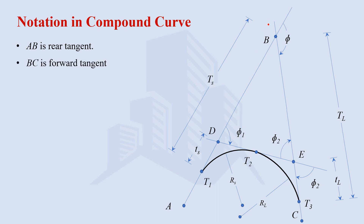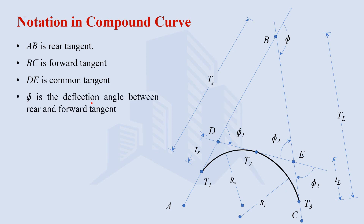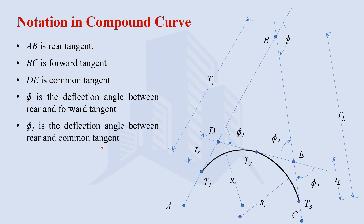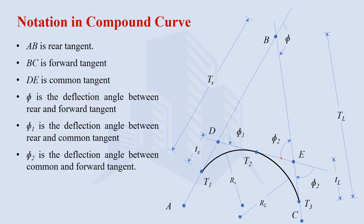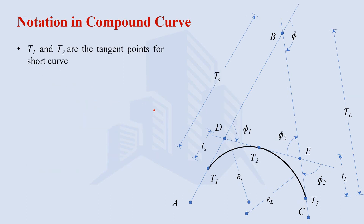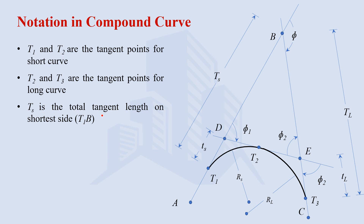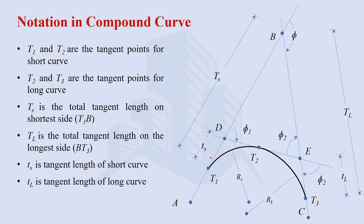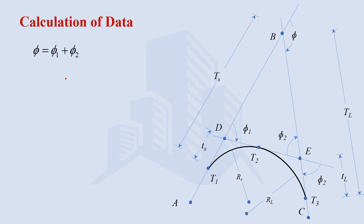So AB is the rear tangent for this compound curve and BC is the forward tangent. D is the common tangent. The phi angle is the total deflection angle between rear and forward tangent for the compound curve. Phi 1 is the deflection angle between rear and common tangent. Phi 2 is the deflection angle between common and forward tangent. T1 and T2 are the tangent points for the short curve; T2 and T3 are the tangent points for the long curve. TS is the total tangent length on the shortest side and TL is the total tangent length on the longest side.